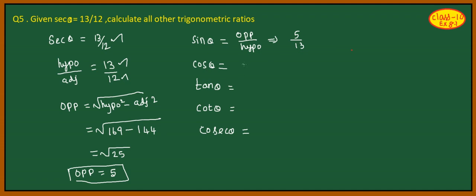Second, cos theta. Formula: adjacent side by hypotenuse. So, adjacent side is 12 and hypotenuse is always 13. Therefore, cos theta equals 12 by 13.